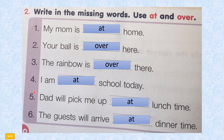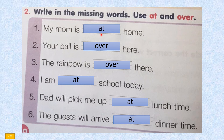Number two on page 30 — same page. The activity is: write in the missing words, use "at" and "over". Number one: my mom is at home. Number two: your ball is over here.